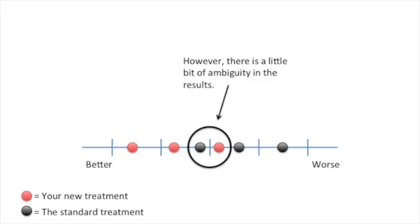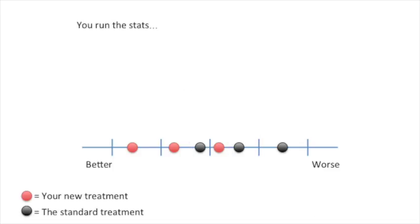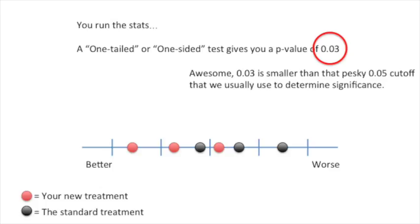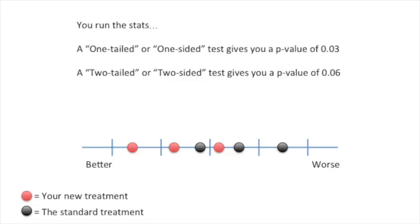However, there is a little bit of ambiguity in the results. So you run the stats. A one-tailed or one-sided test gives you a p-value of 0.03. Awesome! 0.03 is smaller than that pesky 0.05 cutoff that we usually use to determine significance. A two-tailed or two-sided test gives you a p-value of 0.06. Dag! Not so awesome! Which p-value should you use?